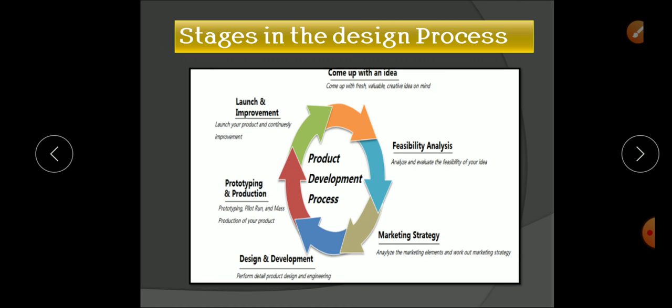This slide shows the stages in the design process. The first step in product design is to come up with a fresh, valuable, and creative idea. By checking market surveys or other surveys we can come up with fresh ideas. The second stage is feasibility analysis — from the number of ideas generated, we select the feasible ones and analyze and evaluate the feasibility of each idea.